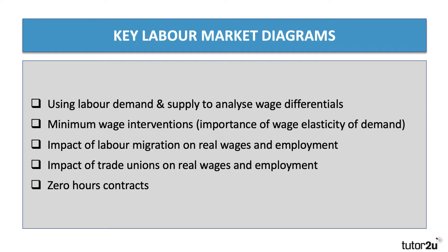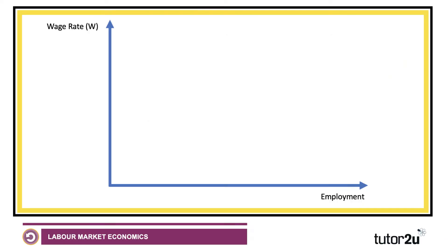So five aspects of labour markets, each time just using supply and demand analysis, hopefully to good effect. When we think about the labour market, we normally put the wage rate on the y-axis — wage rate per hour, for example — and on the x-axis, employment: how many people are employed by a business. The demand for labour comes from employers, and the supply comes from individuals, in this case the occupational supply of labour to particular jobs.